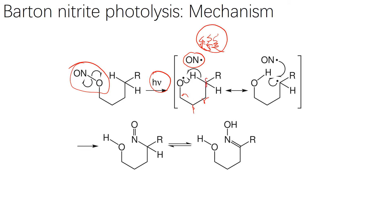有的人会把它叫做alpha、beta、gamma和delta way，说是delta位的氢转移到原来的那个氧自由基上。也有人说它叫一个1,5的氢转移。怎么理解这个1,5呢？1号、2号、3号、4号、5号，5号的氢转移到了1号的氧上，这也叫做1,5的hydrogen transformation。这样一个转移形成的其实是一个六元环过渡态。